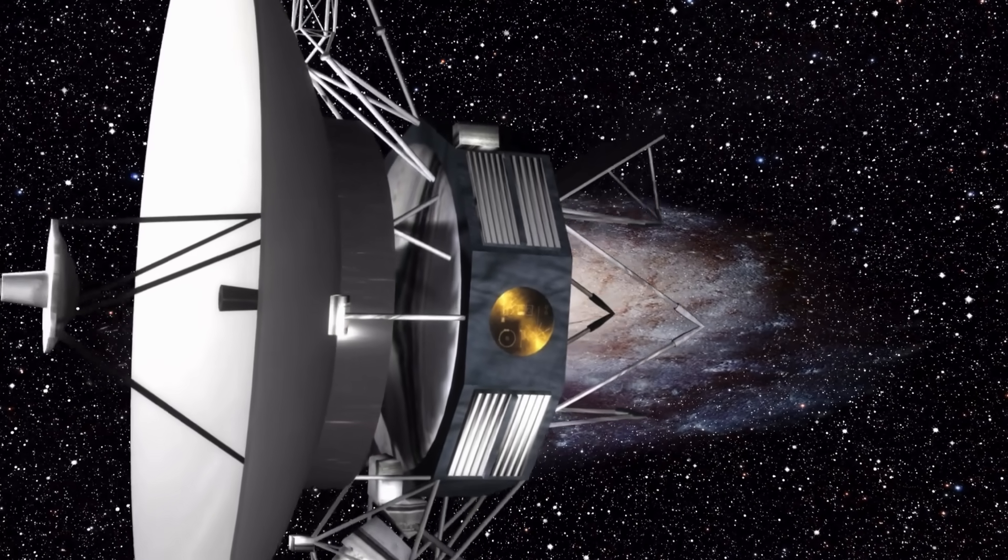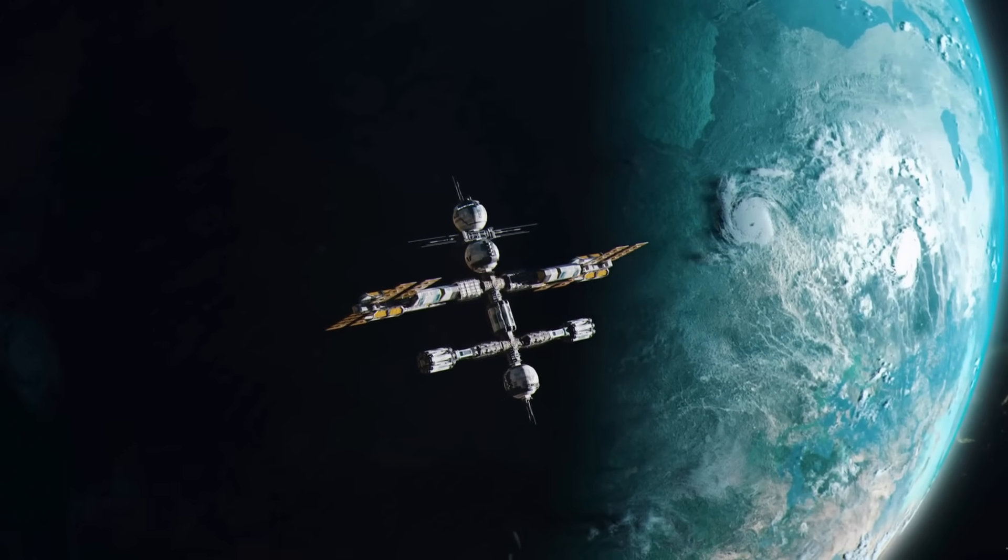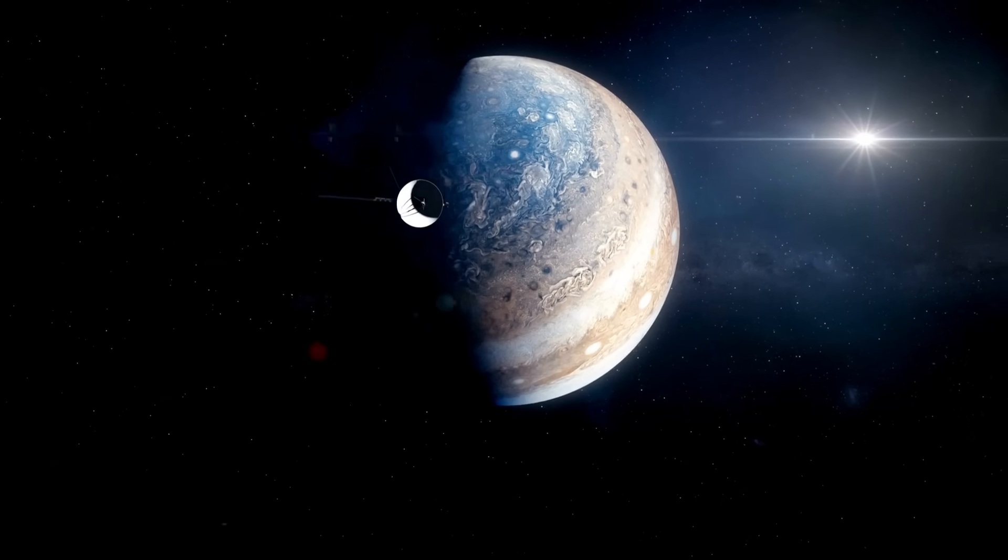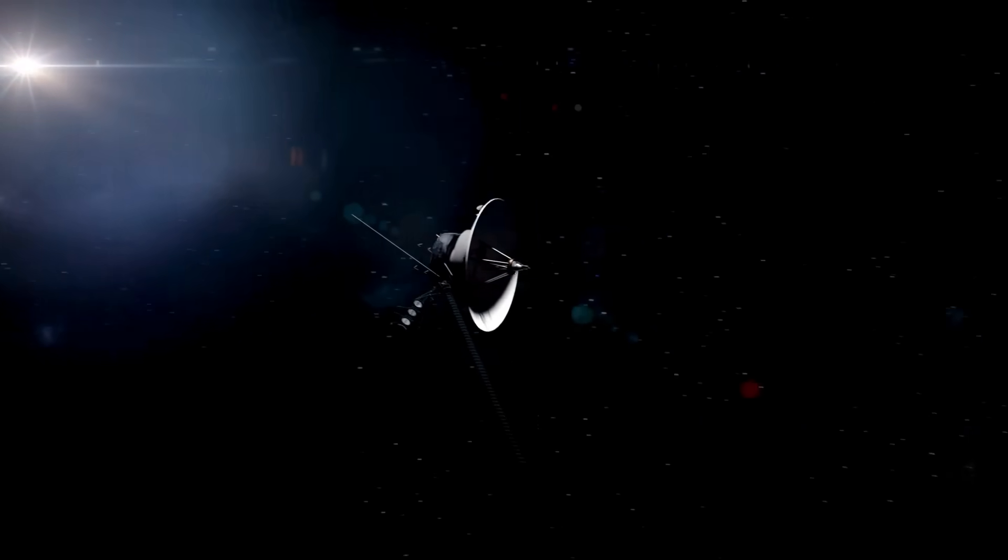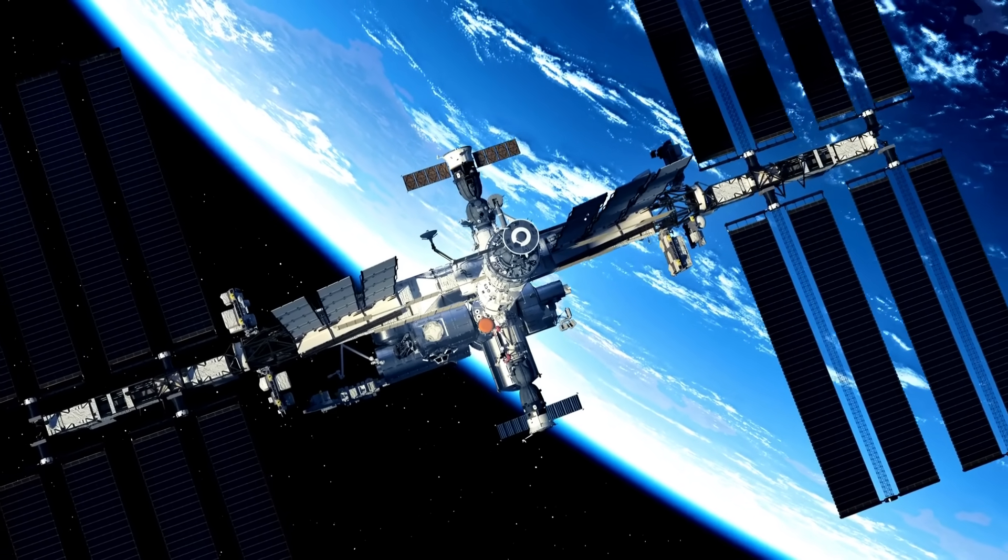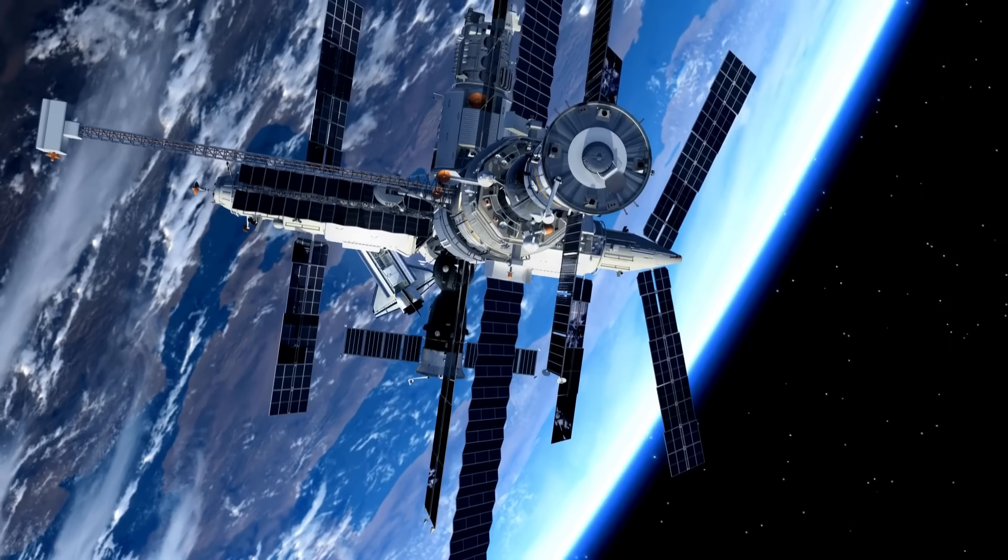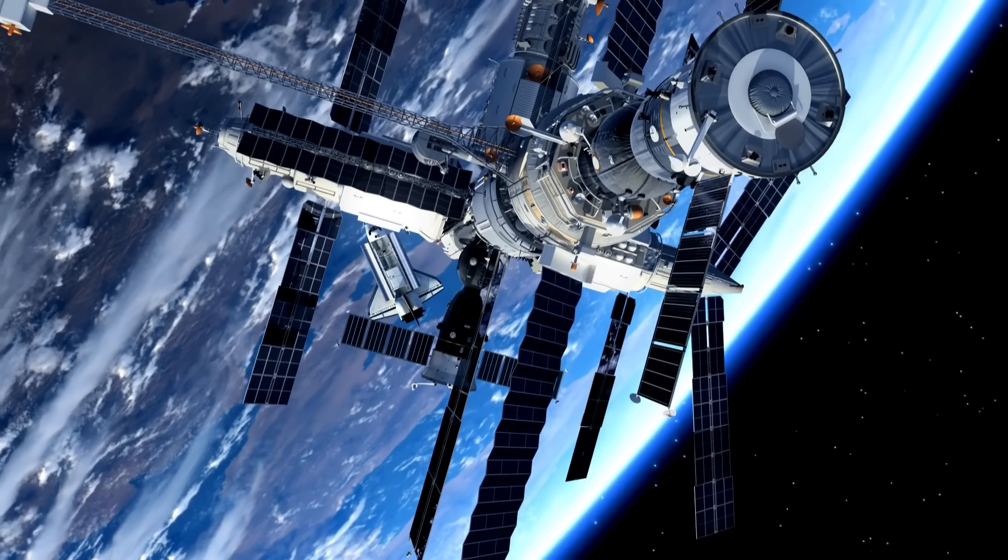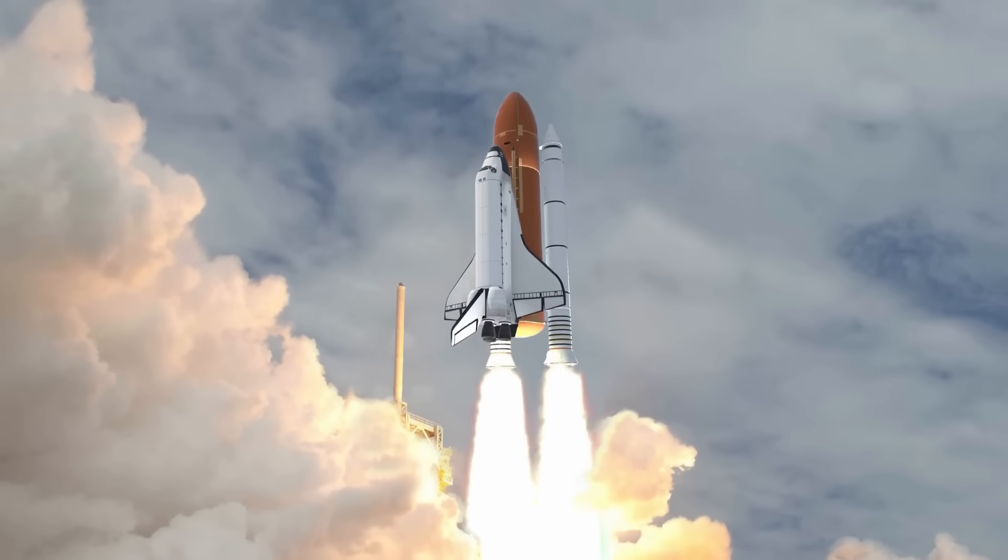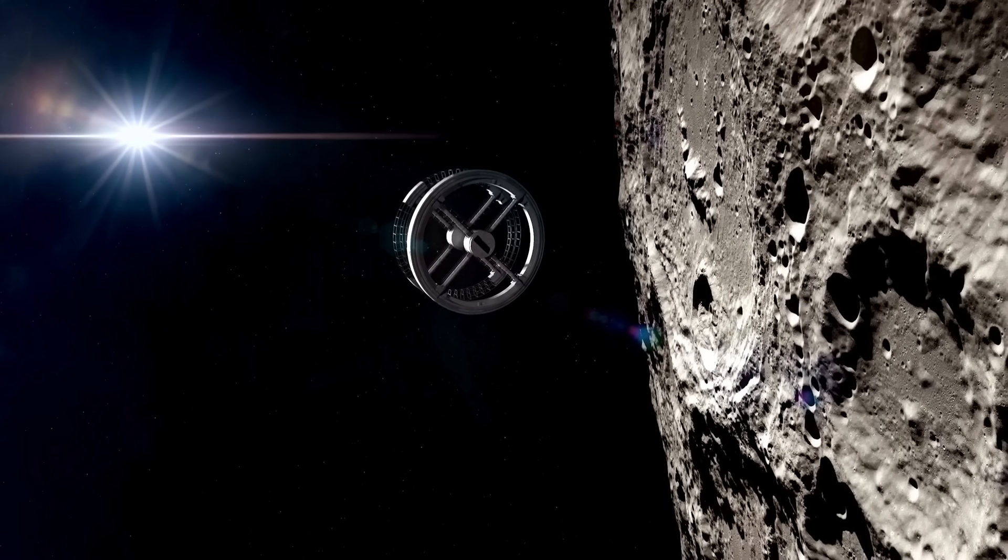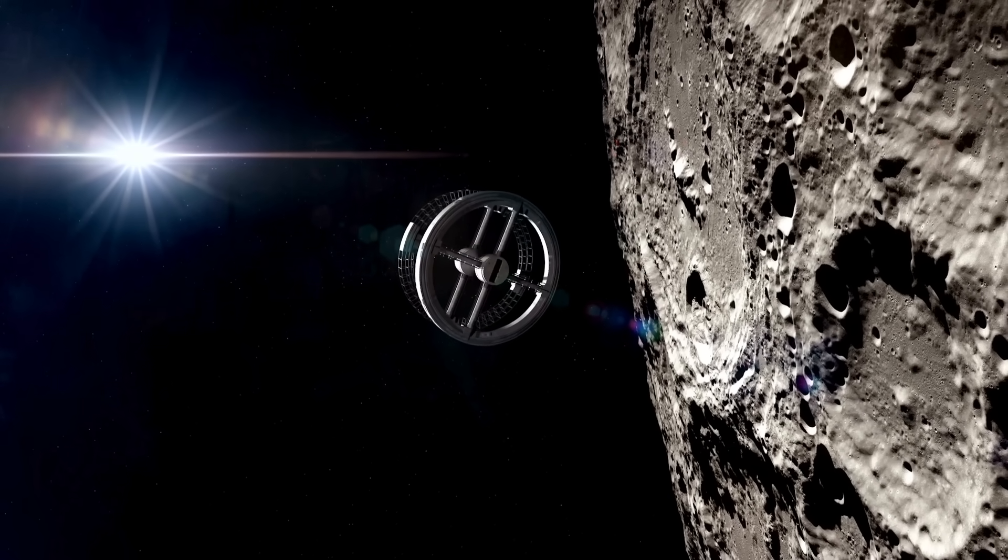Picture this: a machine no bigger than a small car, built with technology older than most people watching this, floating in the freezing void of interstellar space. Its memory is a mere 69 kilobytes, less than a single photo on your phone. Its power comes from a decaying plutonium battery, fading by 4 watts every year. Its signal, weaker than a refrigerator lightbulb, takes 18 hours to reach Earth. By all accounts, this spacecraft should have died decades ago, its circuits frozen, its voice silenced. But Voyager 2 refuses to quit.